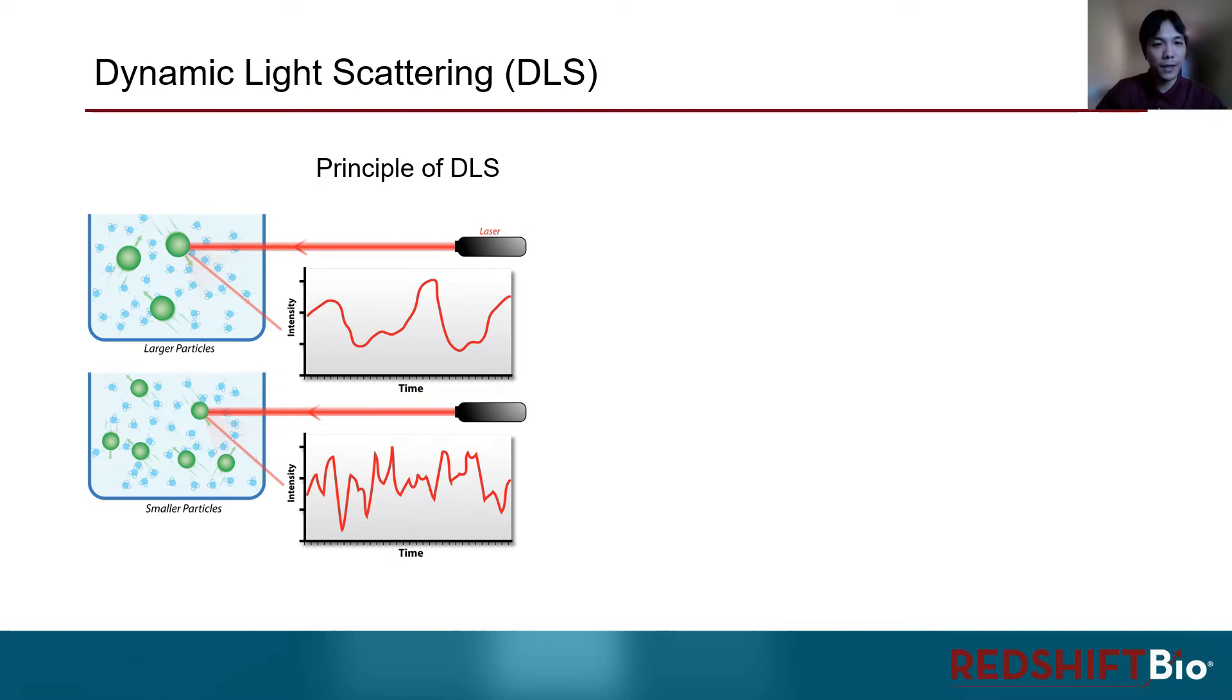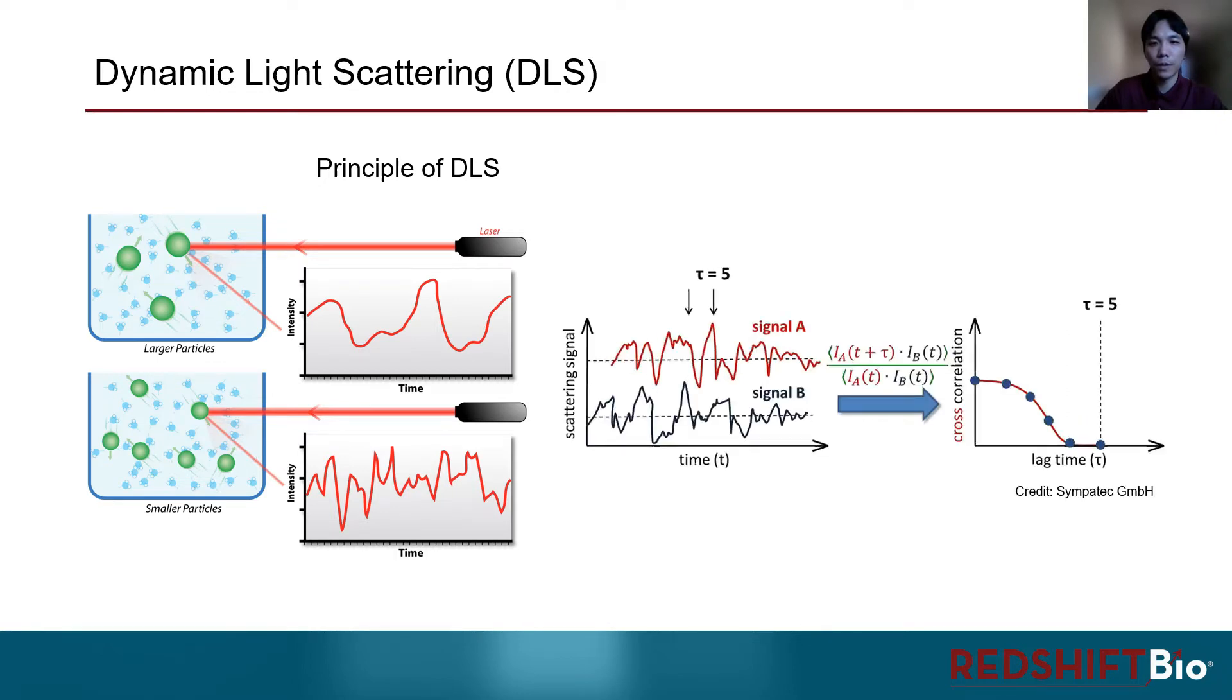So now, how do we use this information to calculate the size of the particles? In DLS, the snapshots of the scattering signals are taken rapidly one after another and compared back to the original signal, which is signal B in this example. Between each snapshot, usually within nano to microseconds, the signals are always pretty similar and well correlated. But as the delay time gets sufficiently larger, the similarity of the signals begin to decrease, and eventually, there will be no more correlation with the original signal.